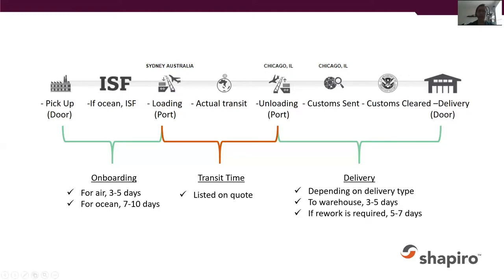The last part is delivery. Delivery depends on what you need. If it's going directly to your warehouse and doesn't need any rework, delivery should take about three to five days. That includes the trucker going to the port, picking up the cargo, taking it to the warehouse, and scheduling the delivery appointment. If rework is required — which we do see a lot for e-commerce shipments, especially for Amazon — such as palletizing or labeling, that's going to take longer depending on warehouse availability, how quickly they can do it, and the appointment going to the e-commerce facility.